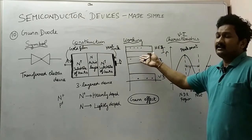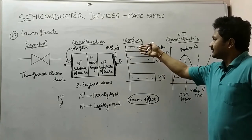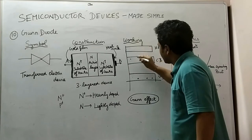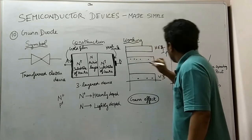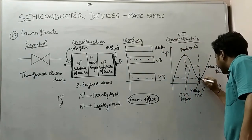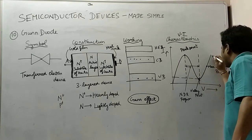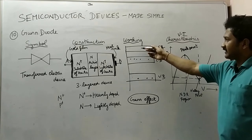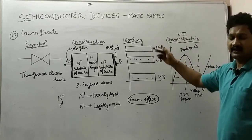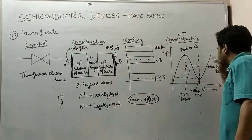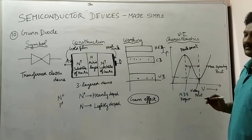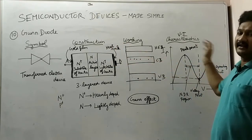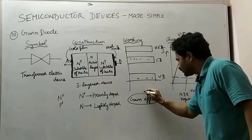After that, somehow these electrons manage to reach the conduction band again. When the electrons begin reaching the conduction band slowly, the current starts to increase from the valley point to the maximum operating point. This occurs due to the transfer of electrons again from the higher energy band back to the conduction band, giving us the maximum operating point.